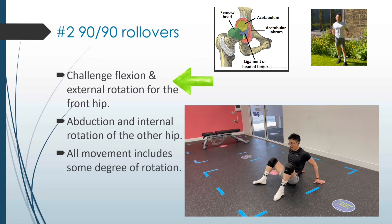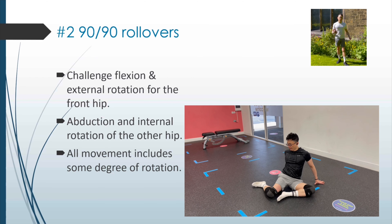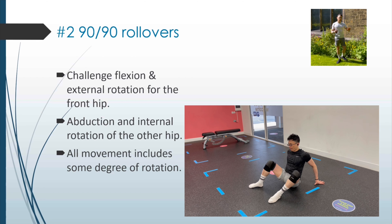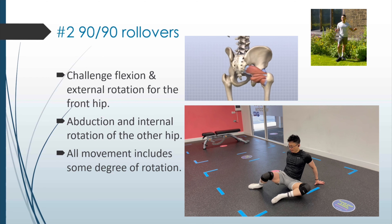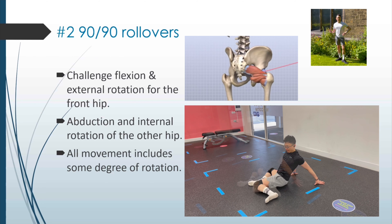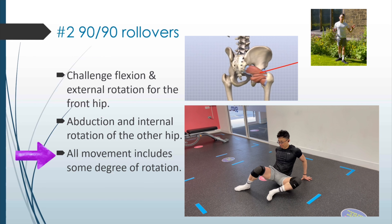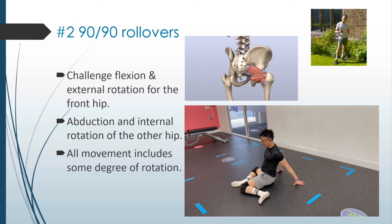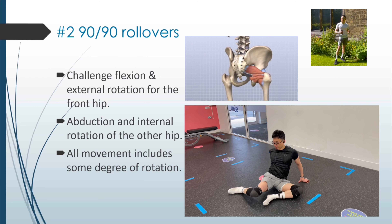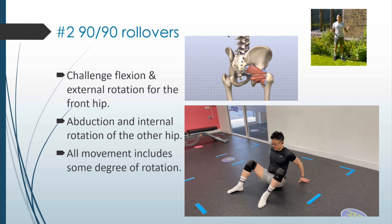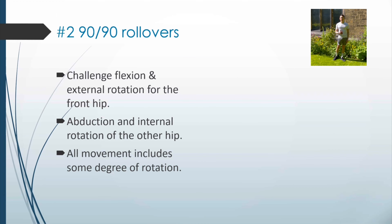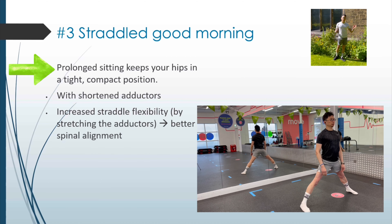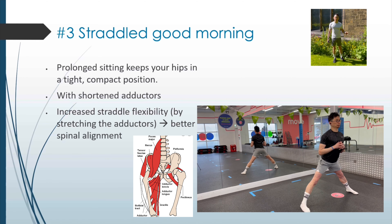The 1990 Roll Over is one of the most effective ways to target the hip capsule. It is a position that challenges flexion and external rotation for the front hip, while the back hip is in abduction and internal rotation. The ability to rotate efficiently at the hip joint is crucial for overall health. As a ball and socket joint, all movement includes some degree of rotation, meaning even while flexing and extending the hip, there is rotation happening. So whether you are walking or running, the ability to rotate the hip is crucial.